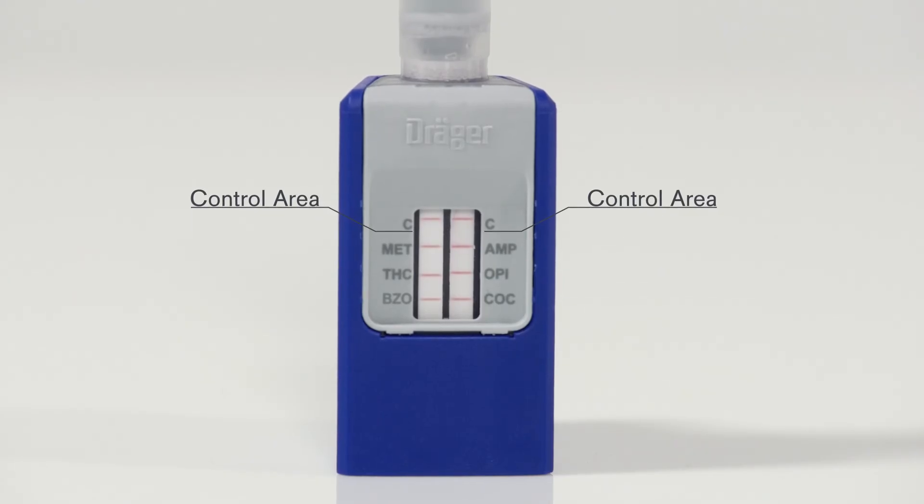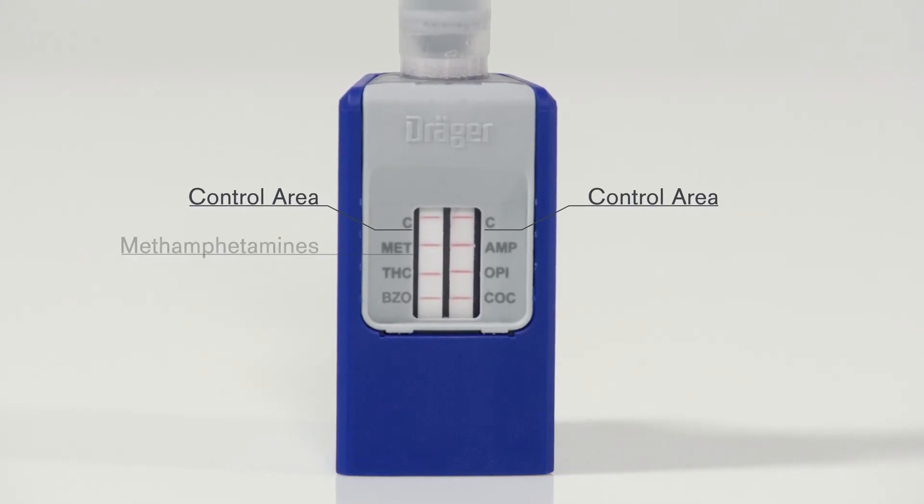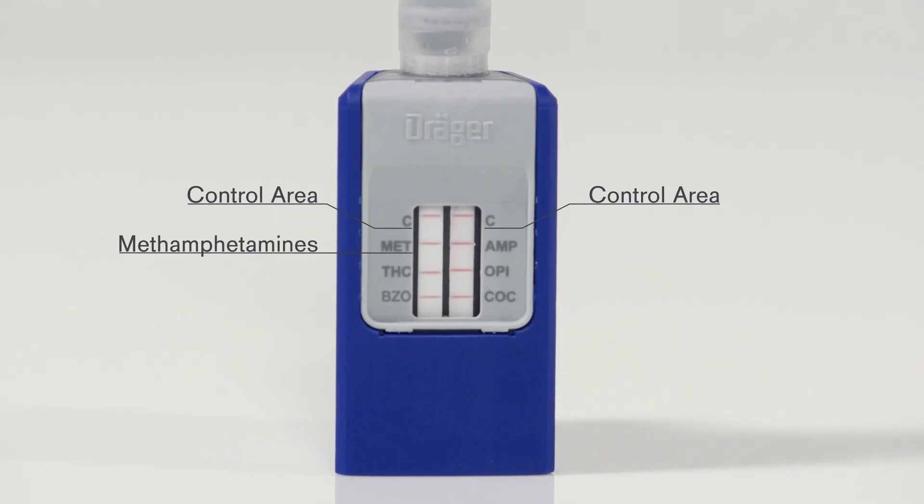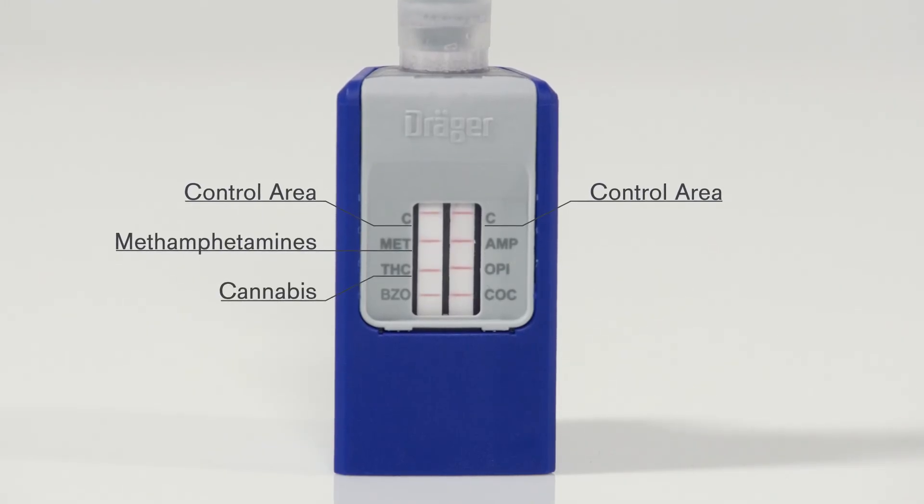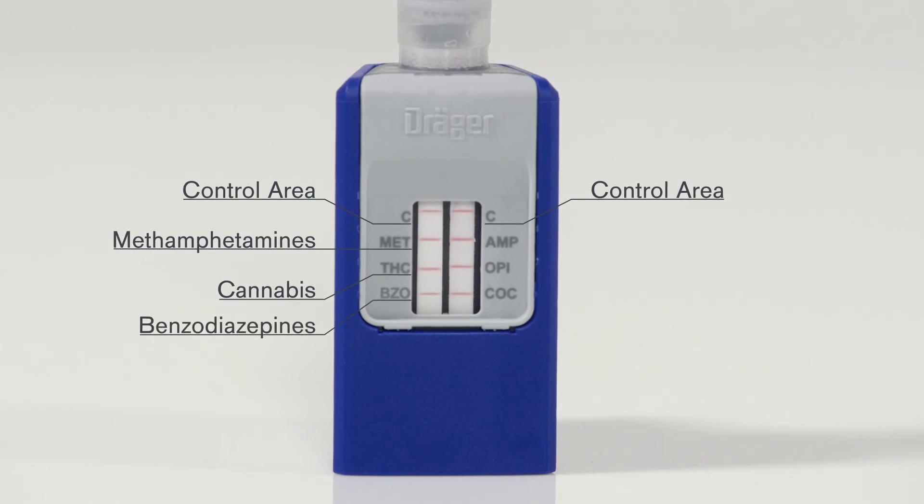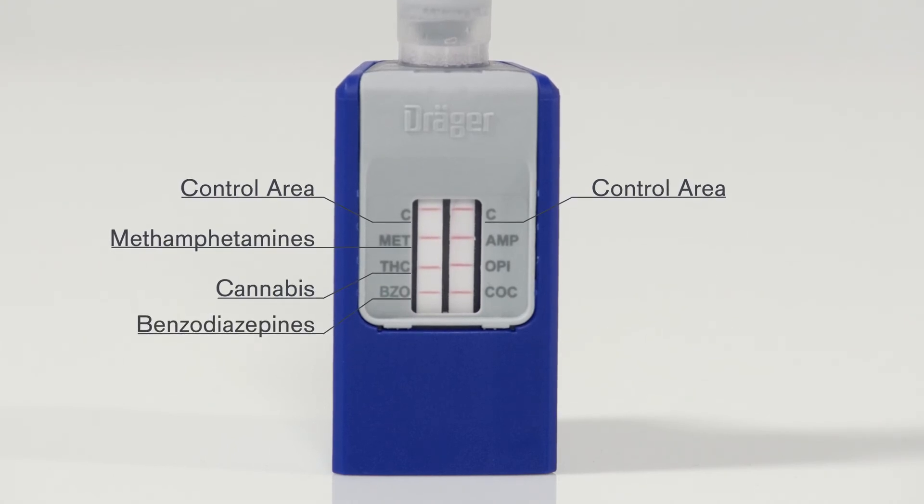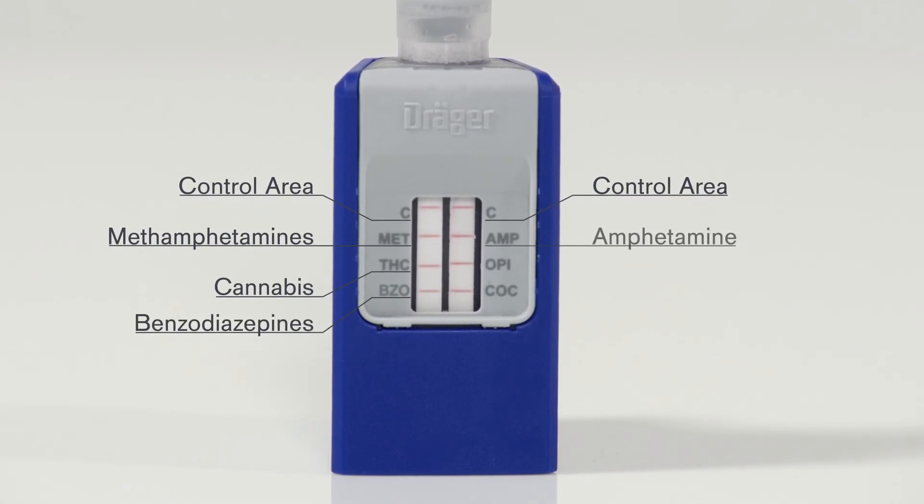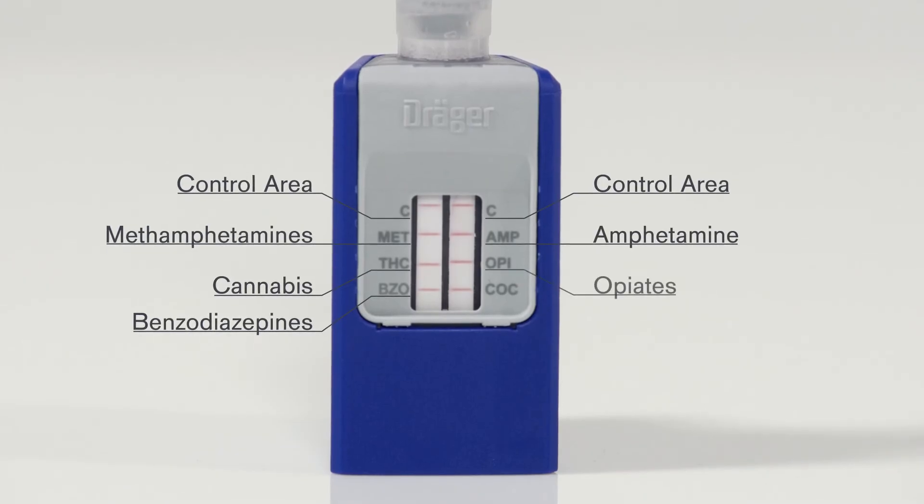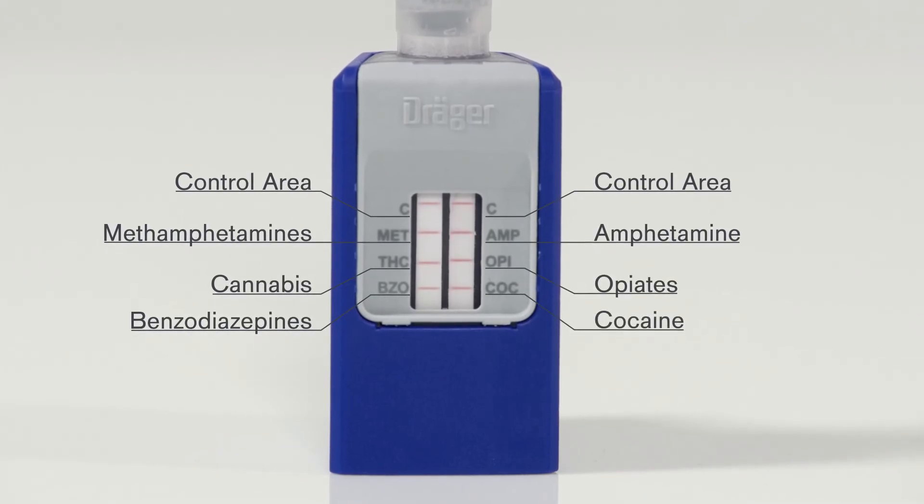On the left, MET stands for methamphetamines, THC for the active ingredient in cannabis, and BZO for benzodiazepines. On the right, AMP stands for amphetamine, OPI for opiates, and COC for cocaine.